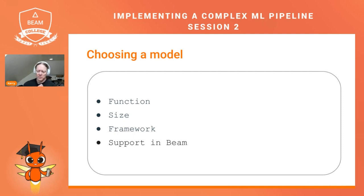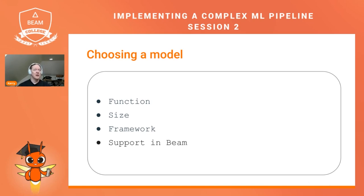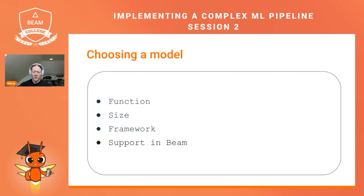When you have a problem that you're using an ML model to solve, there are several considerations for choosing a model. The most important consideration is the function — will the model do what you need? This can often be more of a challenge than you expect. You may have a task that doesn't map well to a given model, or it may be difficult to find the right model for a task. When looking for a model, I usually turn to HuggingFace as my first stop, as it seems to be the biggest model repository these days, and it has models organized by their function.